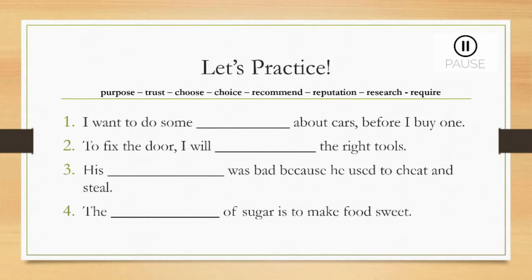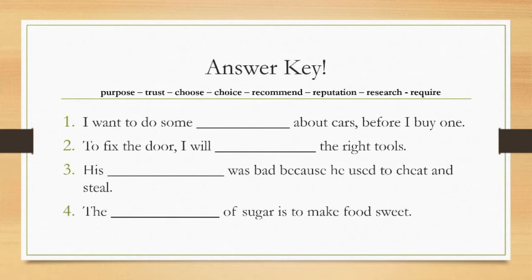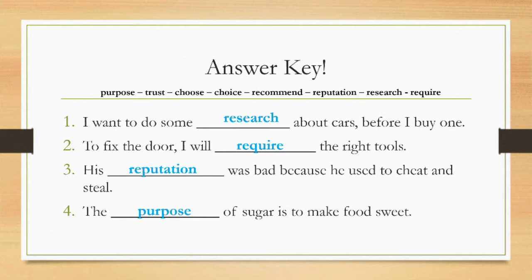Let's practice. Using the words we have just learned, fill in the blanks. You can pause this video and press play when you are ready. Number one: I want to do some research about cars before I buy one. Number two: to fix the door, I will require the right tools. Number three: his reputation was bad because he used to cheat and steal. Number four: the purpose of sugar is to make food sweet.